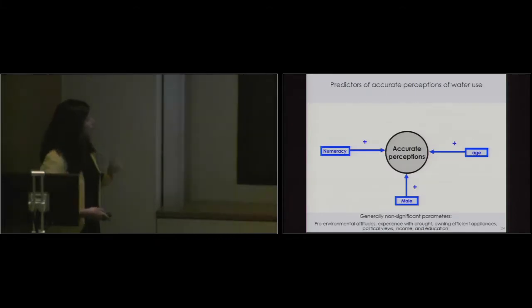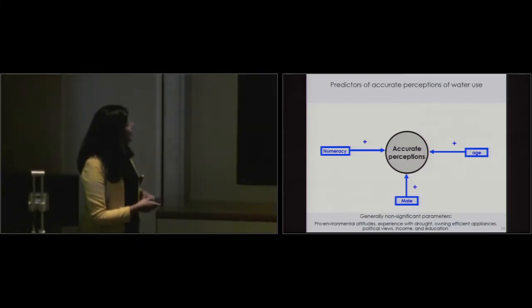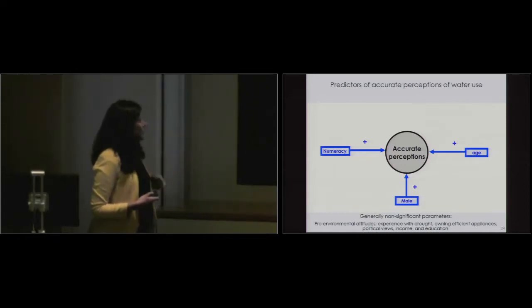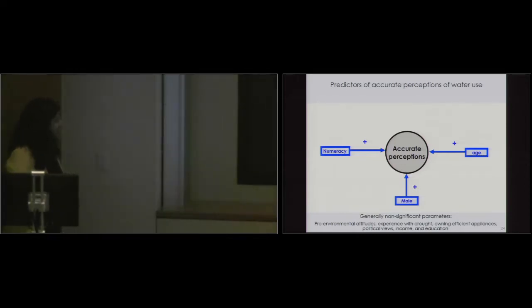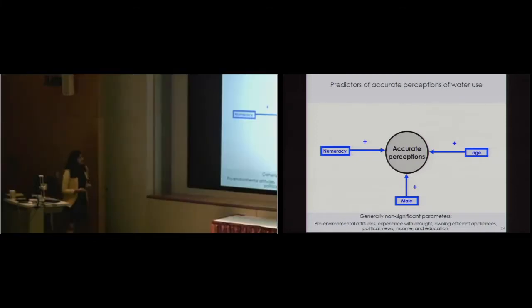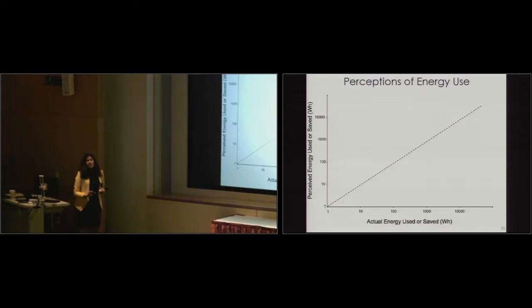So just to put that last information onto one simple graphic, what we found is that people who are numerate, who understood numbers, people who are male, and people who are older had more accurate perceptions of water use. I tested this, checked it. Unfortunately, that's what the data shows. I'm not going to read too much into it. So now let's look at it for electricity. So our lab has been doing water and electricity work sort of side by side.